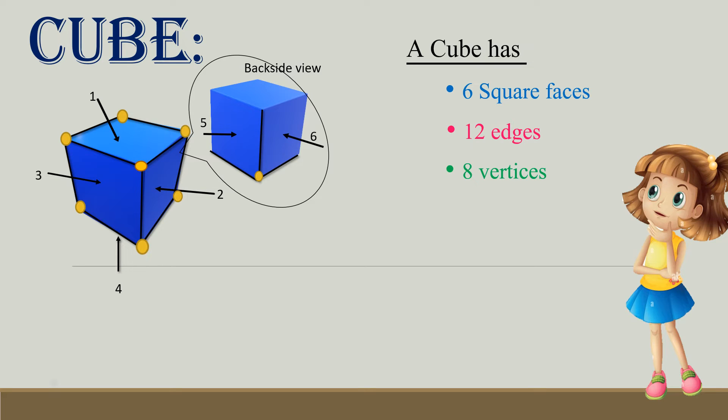So, a cube has six square faces, 12 edges, and 8 vertices. And all sides are equal. Examples: Rubik's cube and dice.